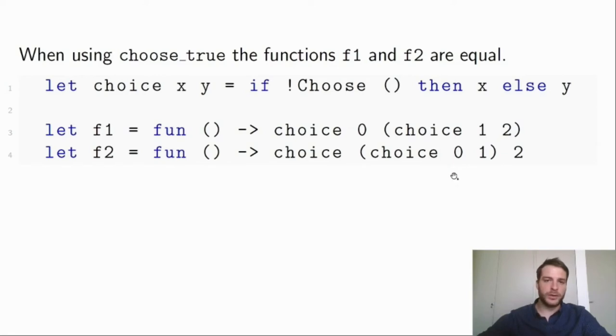They are also equivalent in a broader sense. Every handler that results in an associative implementation of choice results in f1 being equivalent to f2. So another instance of a suitable handler is one that collects all possible results.